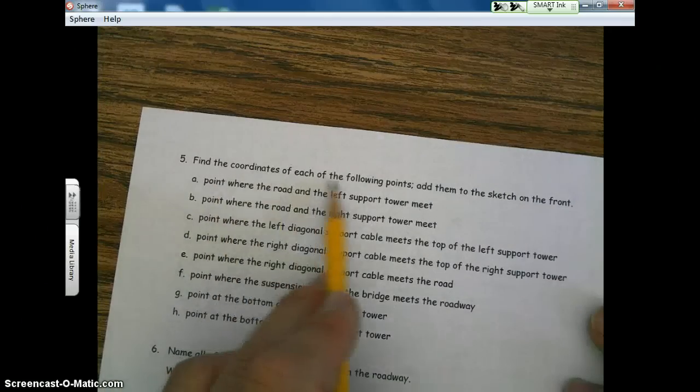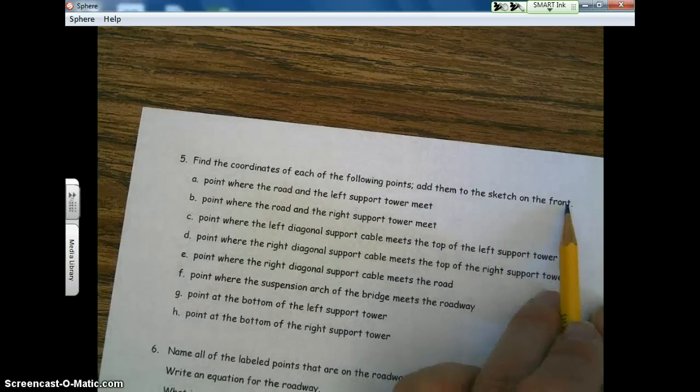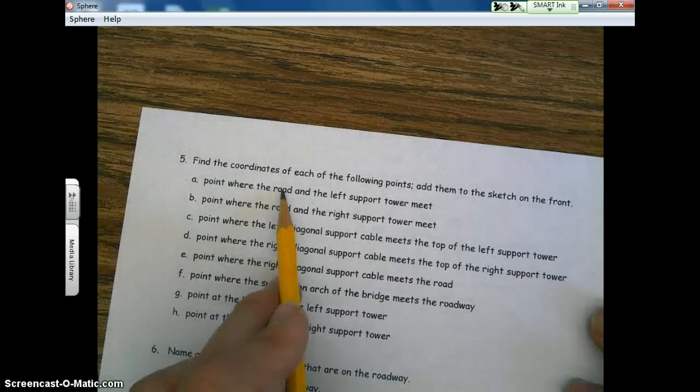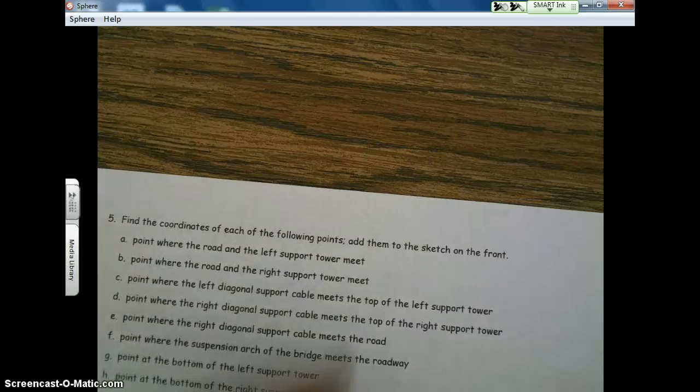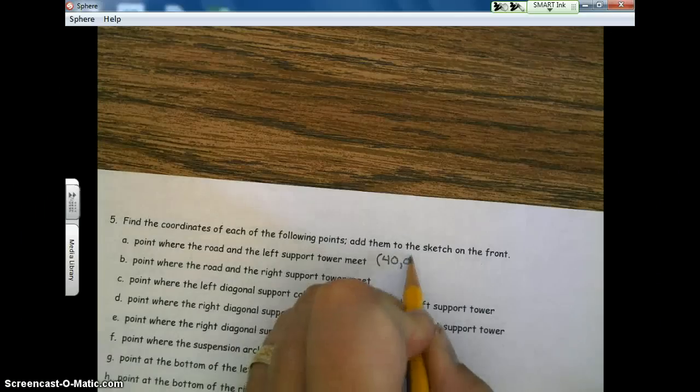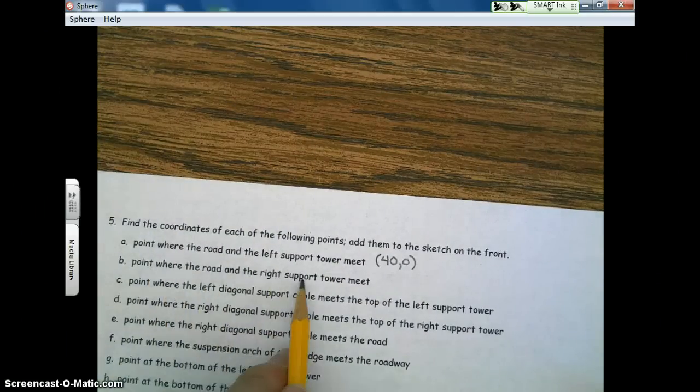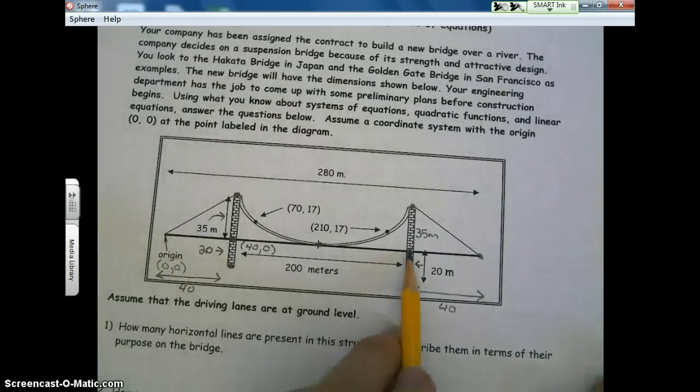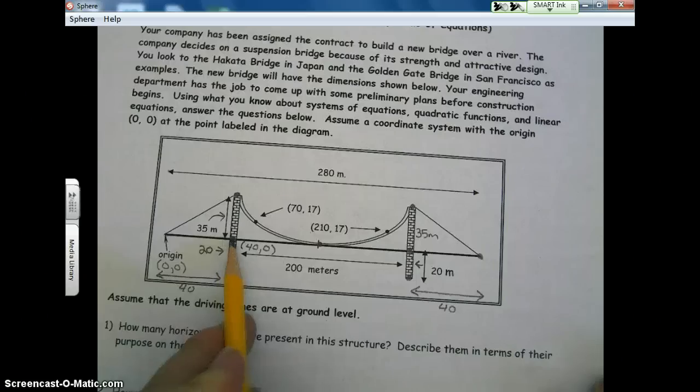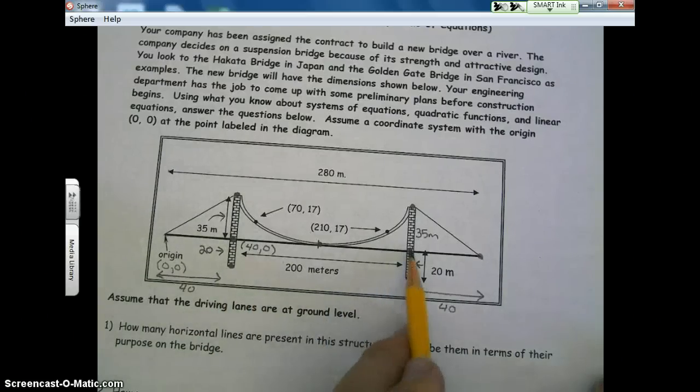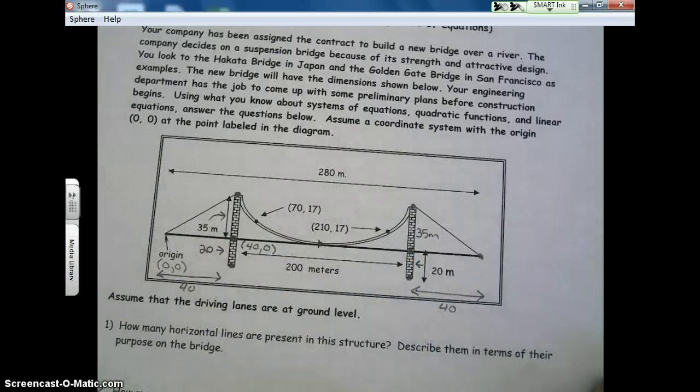And that's going to help you here. It says, find the coordinates of each of the following points. Add them to the sketch on the front. The point where the road and the left support tower meet. So here's the road, and here's the left support tower. So that point is 40, 0. The point where the road and the right support tower meet. Here's the road, here's the right support tower. So we're going to have to add our 40 plus our 200. That gives us this point, 240 comma 0.